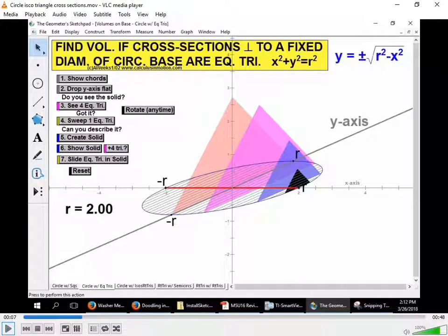We're going to find the volume of this shape with equilateral cross-section triangles. So first we have to find the area of the equilateral triangle. Do you guys know how to find the area of an equilateral triangle?